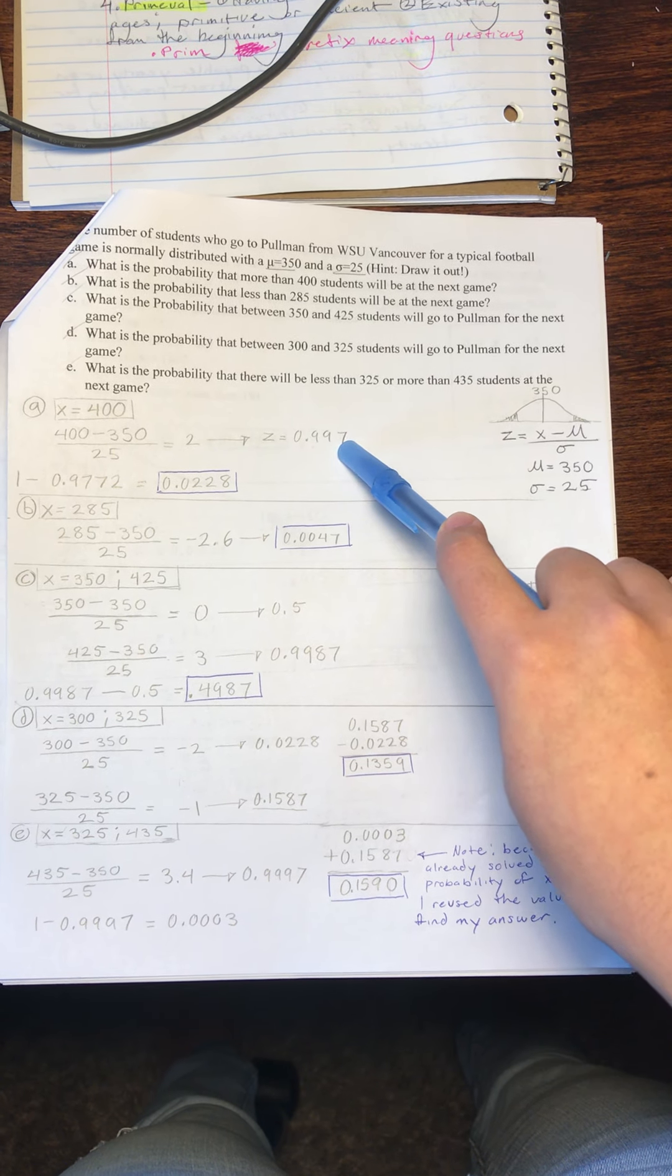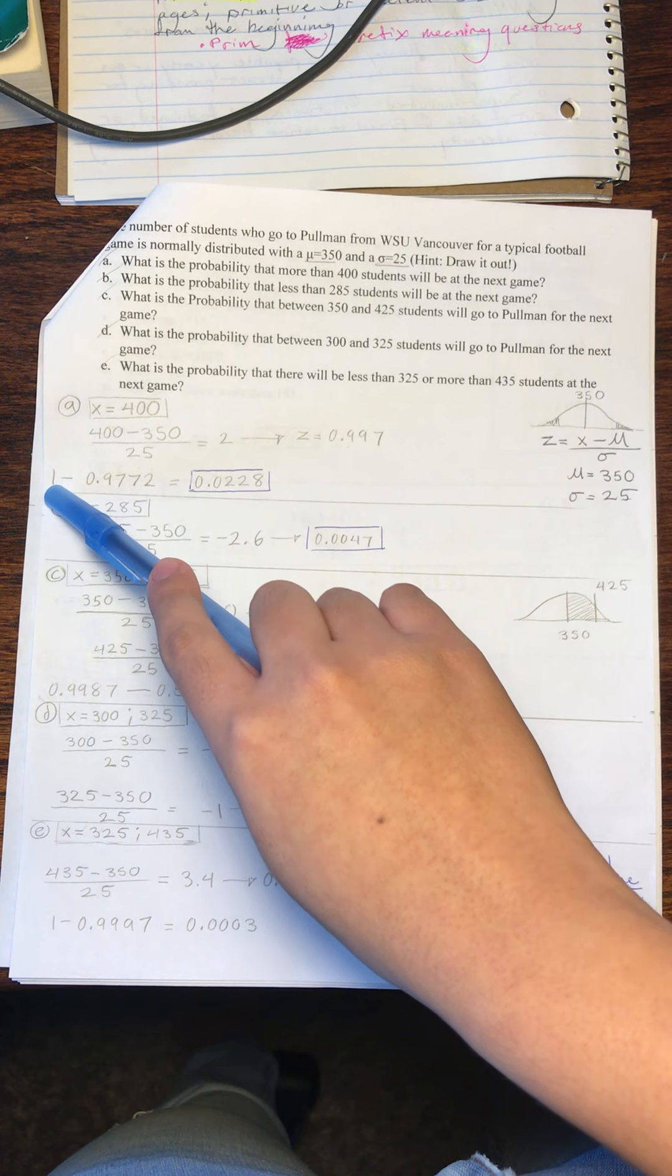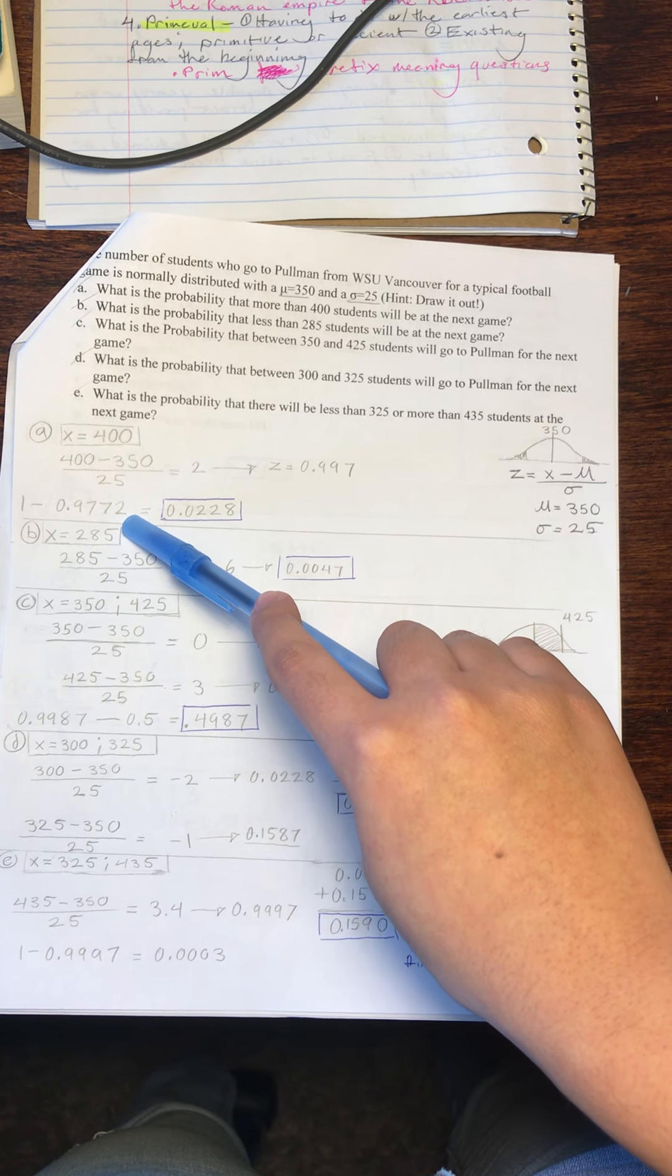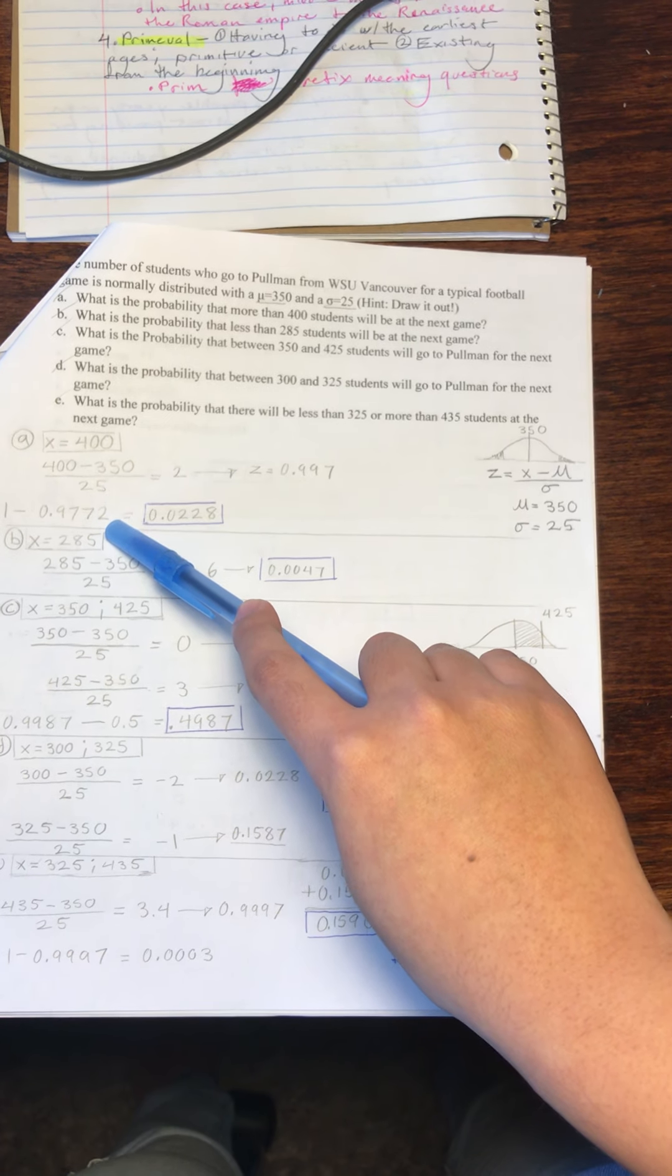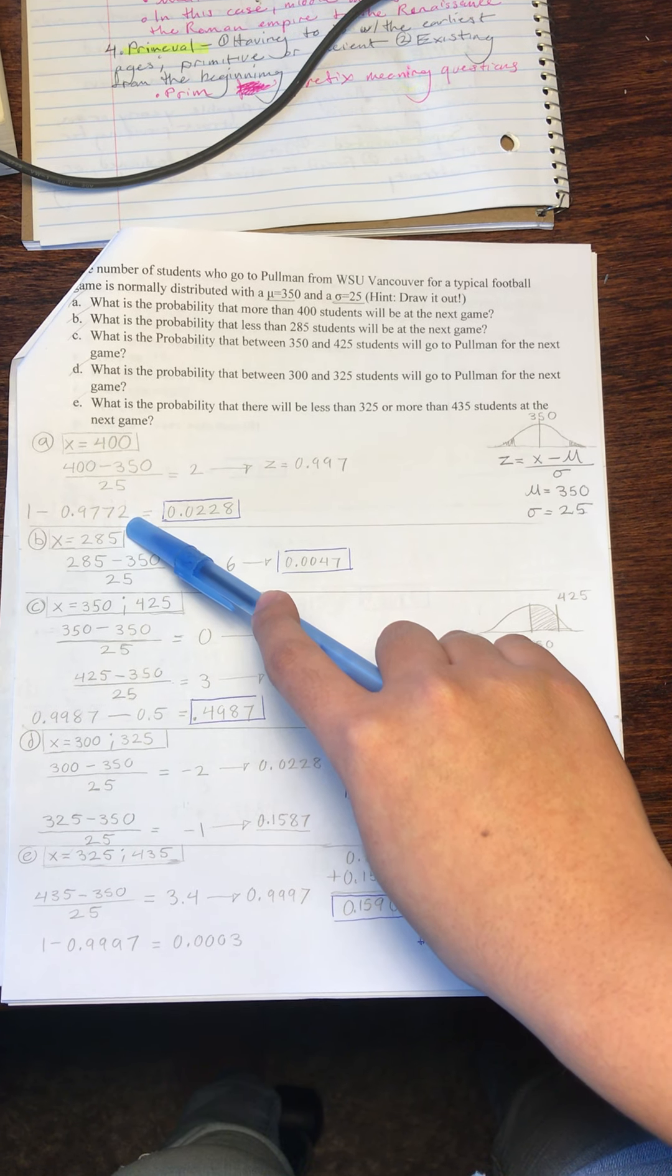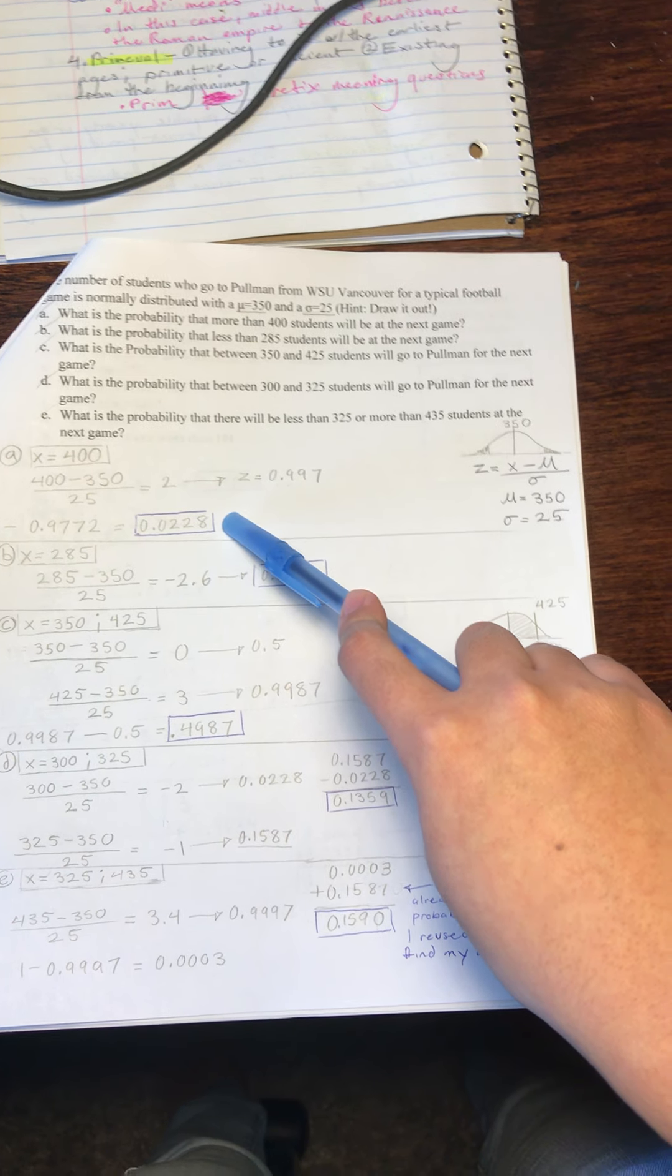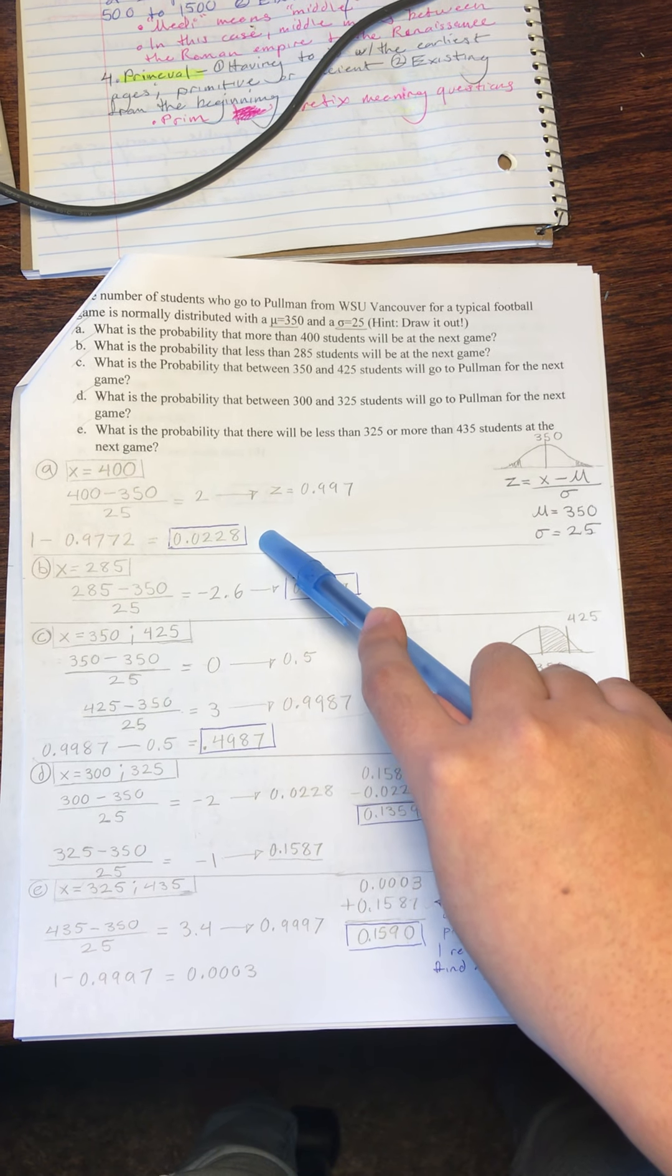We will take 1 minus 0.9772. I realized that I made a mistake somewhere along the lines. I wrote down the wrong number. The process is correct, I just made a mistake here. But anyways, this leads us to a result of 0.0228. So that is the probability that more than 400 students will be at the next game.